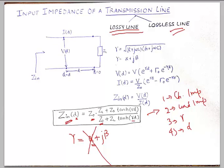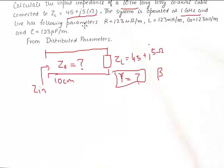What needs to be done here is: we have been given that this transmission line has a distributed resistance of 123 micro ohms per meter. The distributed inductance is also given, the distributed conductance is also given, and the distributed capacitance is also given. Every transmission line has some amount of R, L, C, and G present in it, and together they constitute the characteristic impedance of the transmission line.